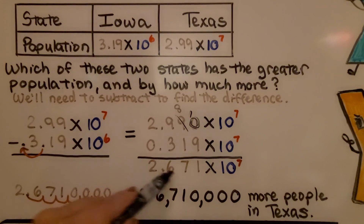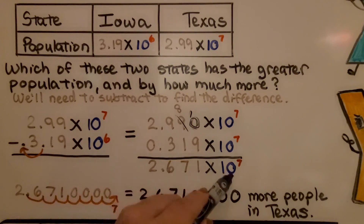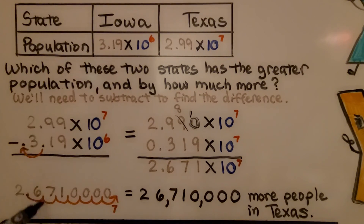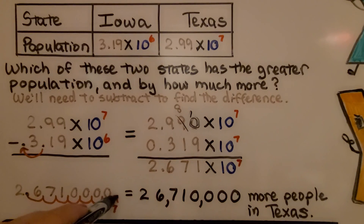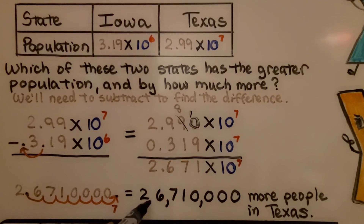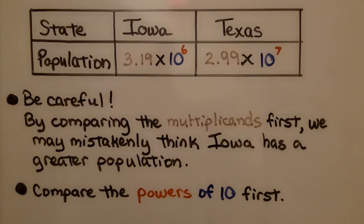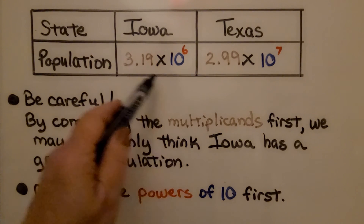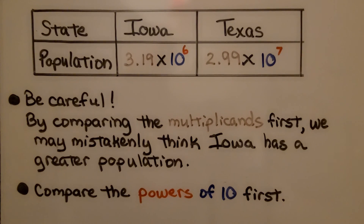That difference represents how many more people are in Texas than Iowa. Converting 2.671 times 10 to the seventh to standard notation gives 26,710,000. We need to be careful: by comparing multiplicands first, we might mistakenly think Iowa has the greater population. Always compare the powers of 10 first.